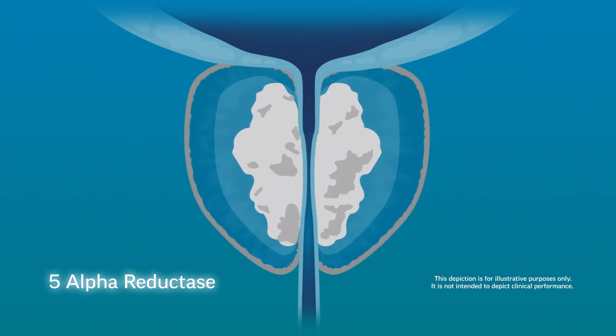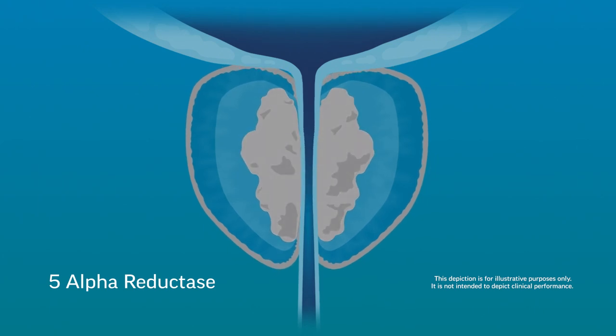5-alpha reductase inhibitors, such as Proscar and Avodart, slow the growth of new prostatic tissue, sometimes enough to reverse the tissue growth process.